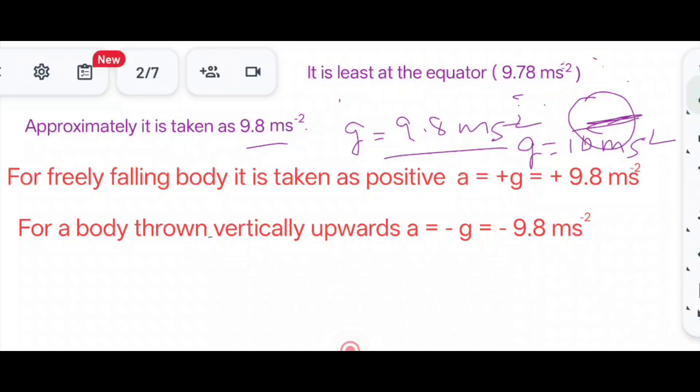For a freely falling body, G is taken positive, that is plus 9.8 meters per second squared. When it is thrown vertically upwards, G is minus 9.8 meters per second squared. But in NCERT textbook it is given opposite: when the body is falling towards the gravity it is taken as negative, and when it is thrown vertically upwards it is taken as positive. Anyhow you can take either convention, we will get the same answer. Or you can follow what your teachers will be telling you.